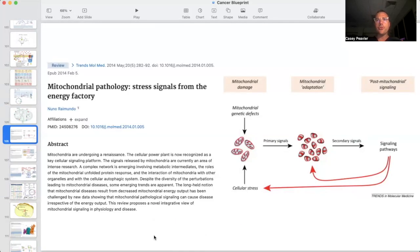So one of the other things that mitochondria do is that they act as environmental sensors for the rest of the body. It's kind of like Dr. Cruz talks about mitochondria are our sixth sense. So I'm going to read this here. Mitochondria undergoing a renaissance. The cellular power plant is now recognized as a key cellular signaling platform. The signals released by mitochondria are currently in an area of intense research. A complex network is emerging involving metabolic intermediates, the roles of mitochondrial unfolded protein response, and the interaction of mitochondria with other organelles and with the cellular autophagic system. Despite the diversity of perturbations leading to mitochondrial diseases, some emerging trends are apparent. The long held notion that mitochondrial diseases resulted from a mitochondrial energy output has been challenged by new data showing that mitochondrial pathological signaling can cause disease irrespective of energy output. This review proposes a novel integrative view of mitochondrial signaling in physiology and disease.